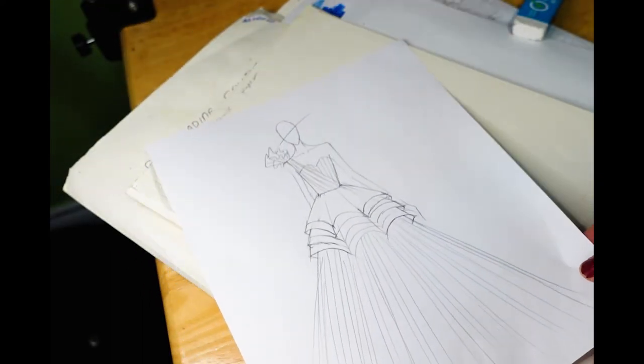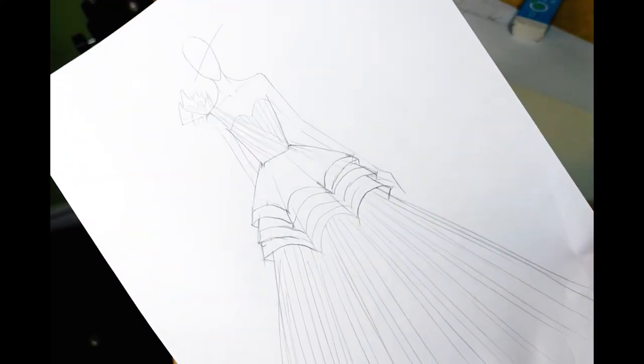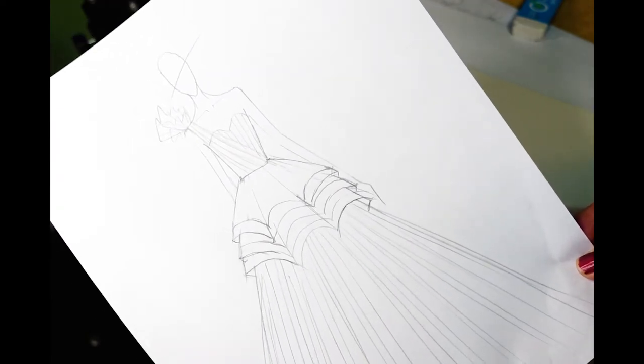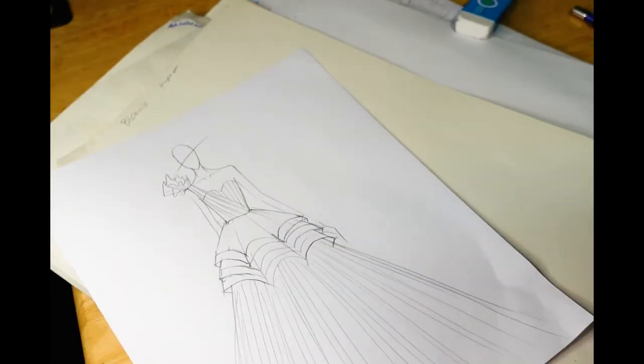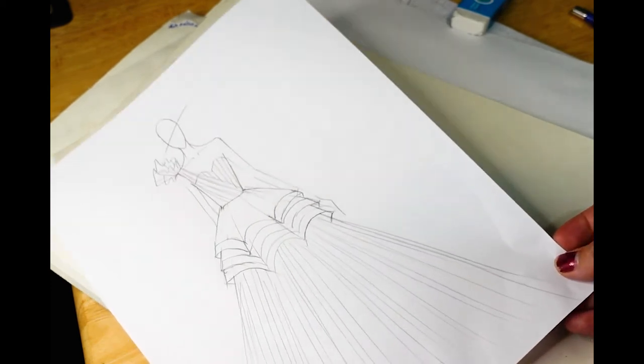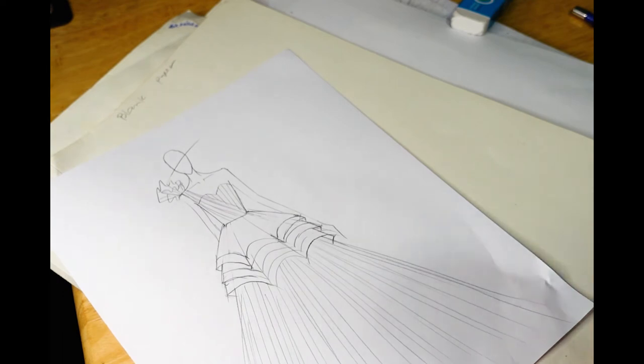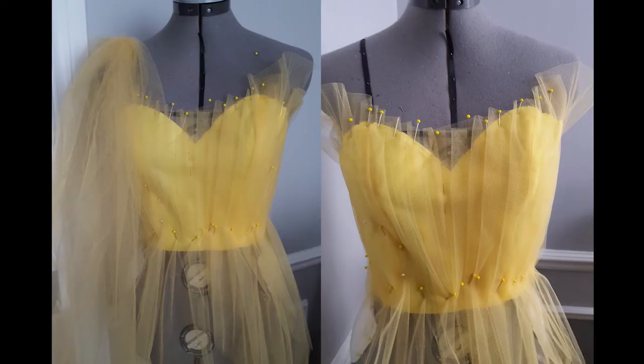Now I am done with illustrating the design. The next part would be making the patterns, but unfortunately I don't have the video for that. We're just going to go ahead with the materials and the rest of the procedures in making this dress. These are the fabrics I got, the tulle from Amazon.